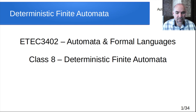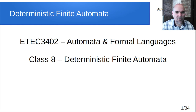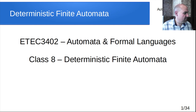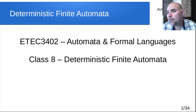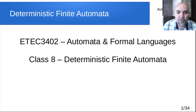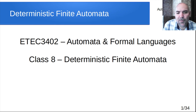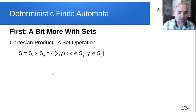Let's get started. This is class eight. We looked at some methods of proof, and we're going to circle back to those later this semester. Today I want to circle back to some of the formal languages and automata stuff. The main topic I want to get through today, at least get started on, is deterministic finite automata. But before we do that, there's a little more stuff with sets that I want to cover.